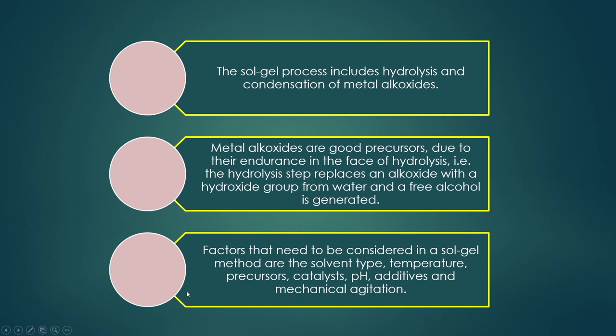The sol-gel process includes hydrolysis and condensation of metal alkoxides, which are good precursors due to their reactivity toward hydrolysis. The hydrolysis step replaces an alkoxide with a hydroxide group from water, generating free alcohol. Factors to be considered in this sol-gel method include the type of solvent, temperature, type of precursor, catalyst, pH, additives, and mechanical agitation.